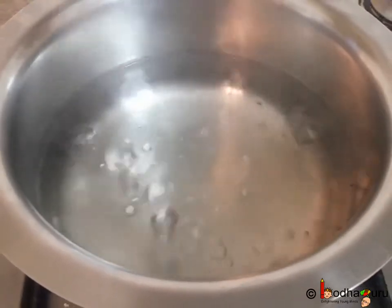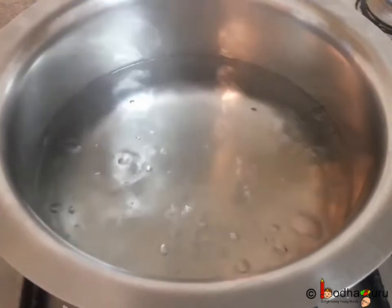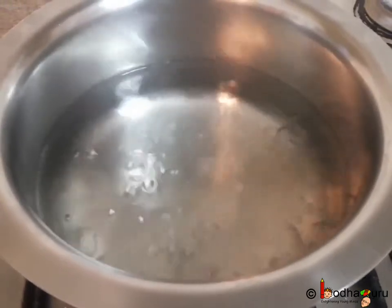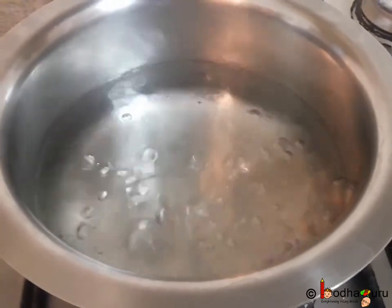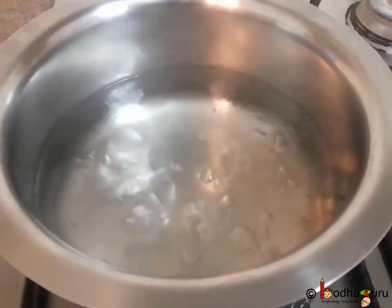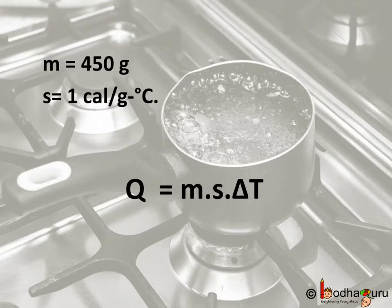Here M is 450 gram. The specific heat of water as we know is 1 calorie per gram degree Celsius. And we can use this formula Q equals M multiplied by S multiplied by delta T to find it out.